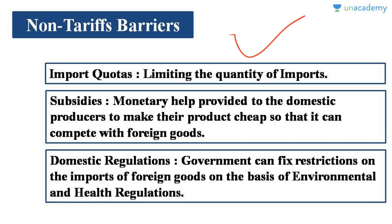When the government provides monetary support in the form of subsidies, the price comes down, and domestic goods are able to compete with foreign imported goods. Another non-tariff barrier is domestic regulations. The government can fix regulations based on environmental and health-related issues. Goods must meet these conditions — if they cannot, they will not be allowed to be imported.